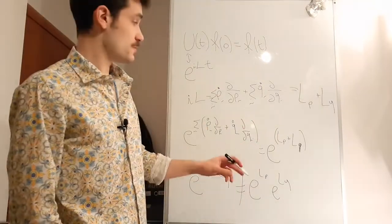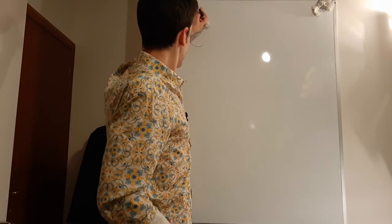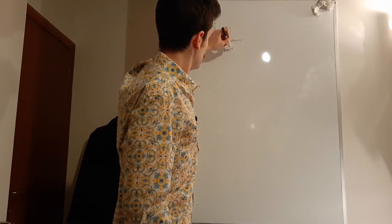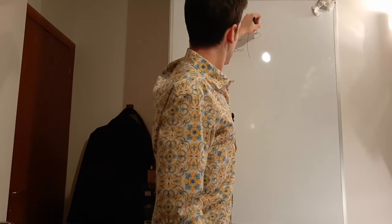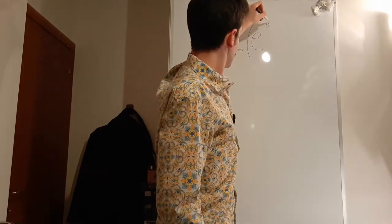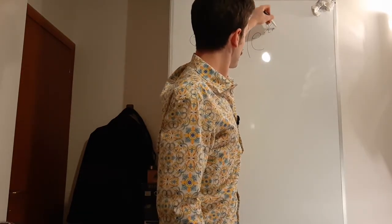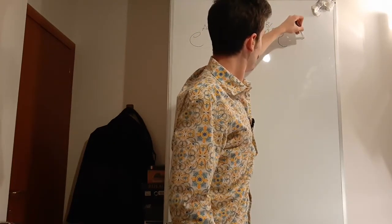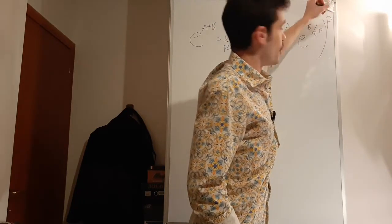How could we do it to still have something like a splitting? In our help, we have a theorem that says that e to the A plus B is equal in the limit for a value P that goes to infinity of e to the B over 2P, e to the A over P, e to the B over 2P, all at the power of P.